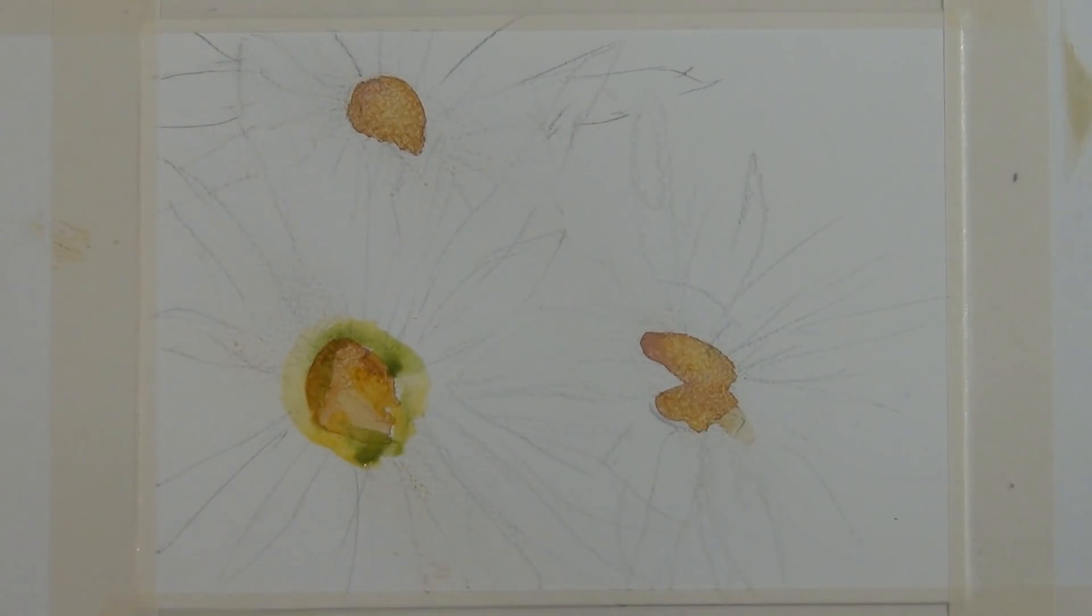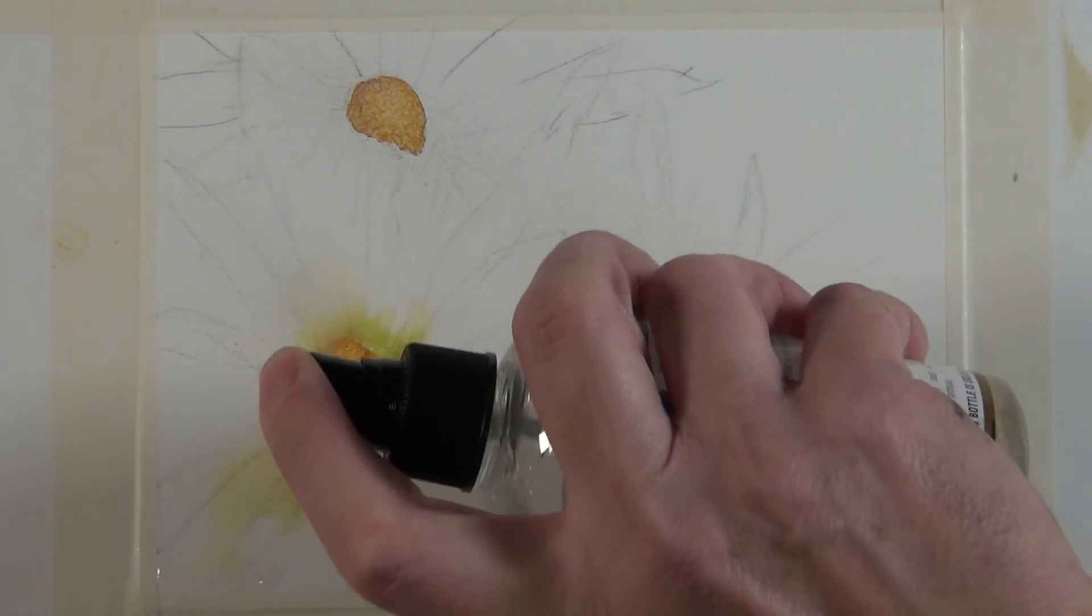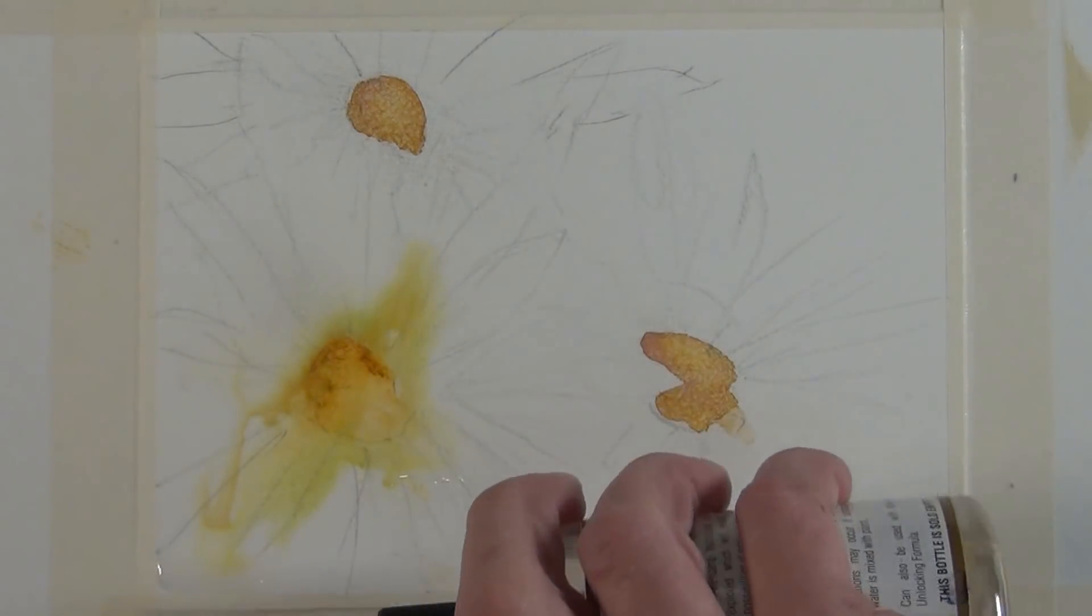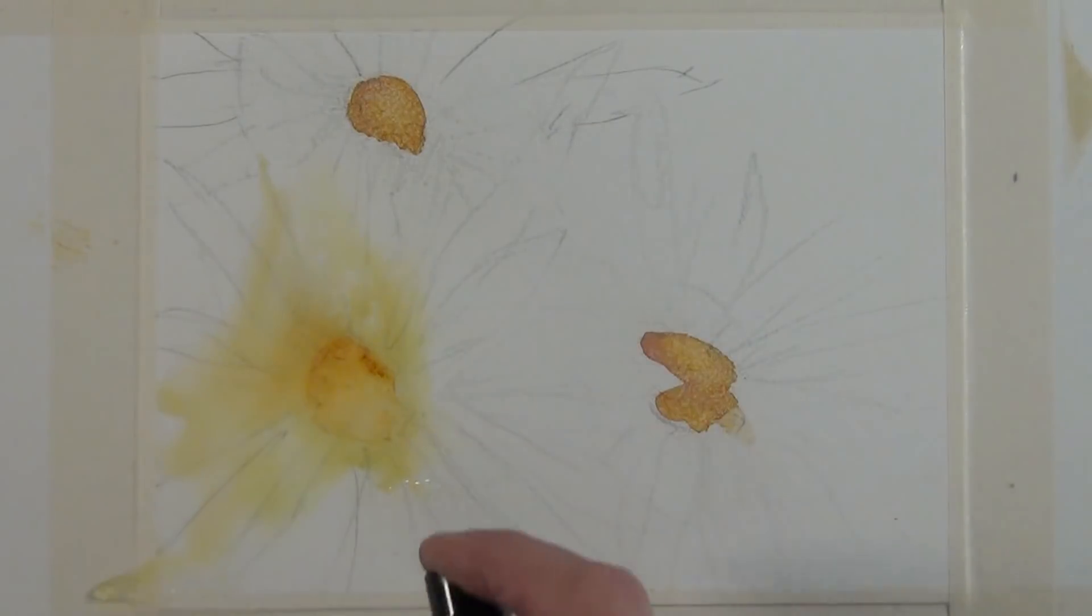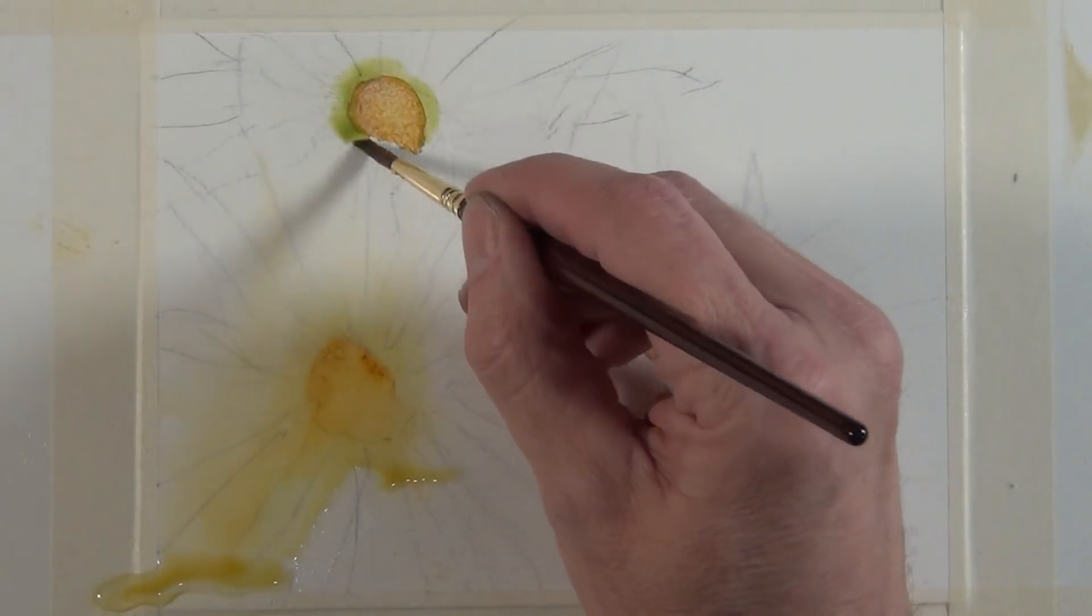I'm putting down a light wash of sap green and cad yellow light. Then I hit it with a fine mist spray bottle and diffuse that color. A lot of this composition is going to be light and white, and just diffusing this color away from the center of these flowers and kind of radiates out just gives me a nice effect for the color that I'm going to have in this composition.